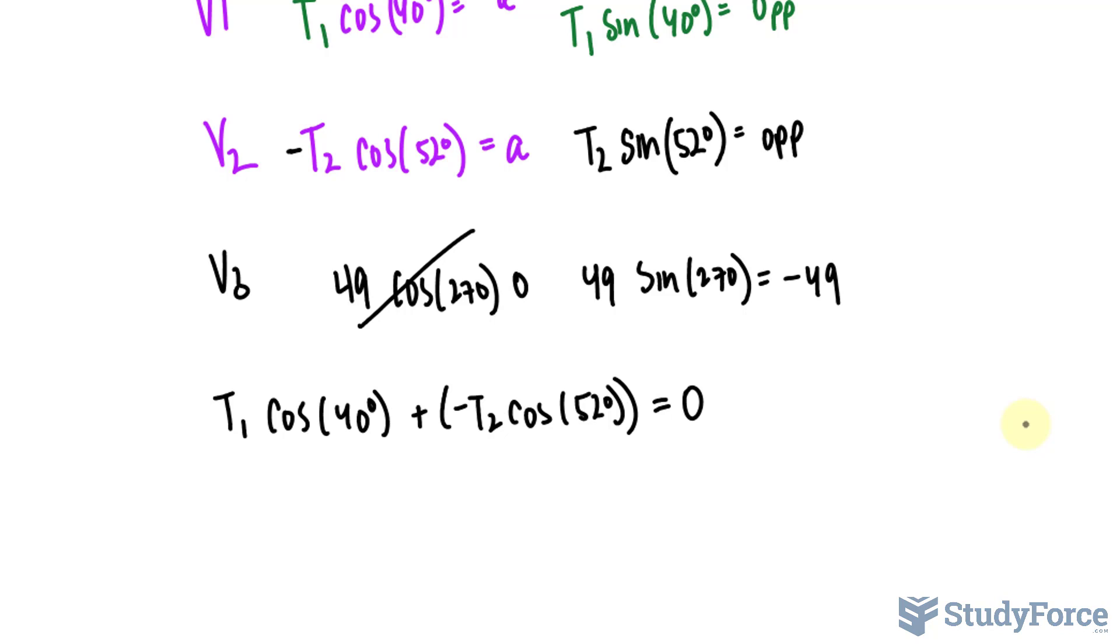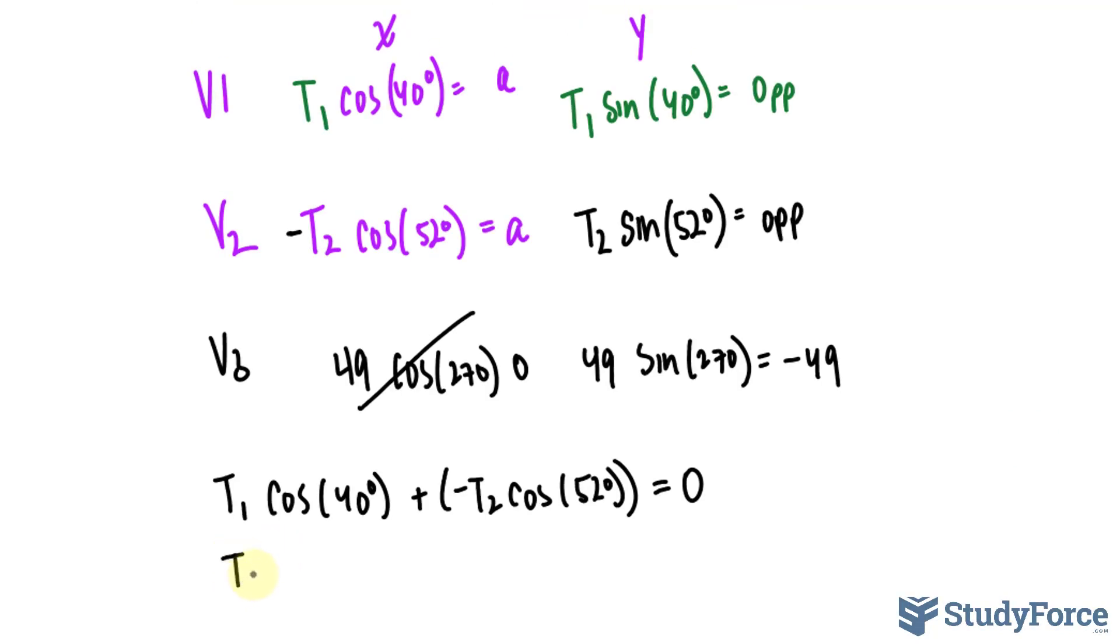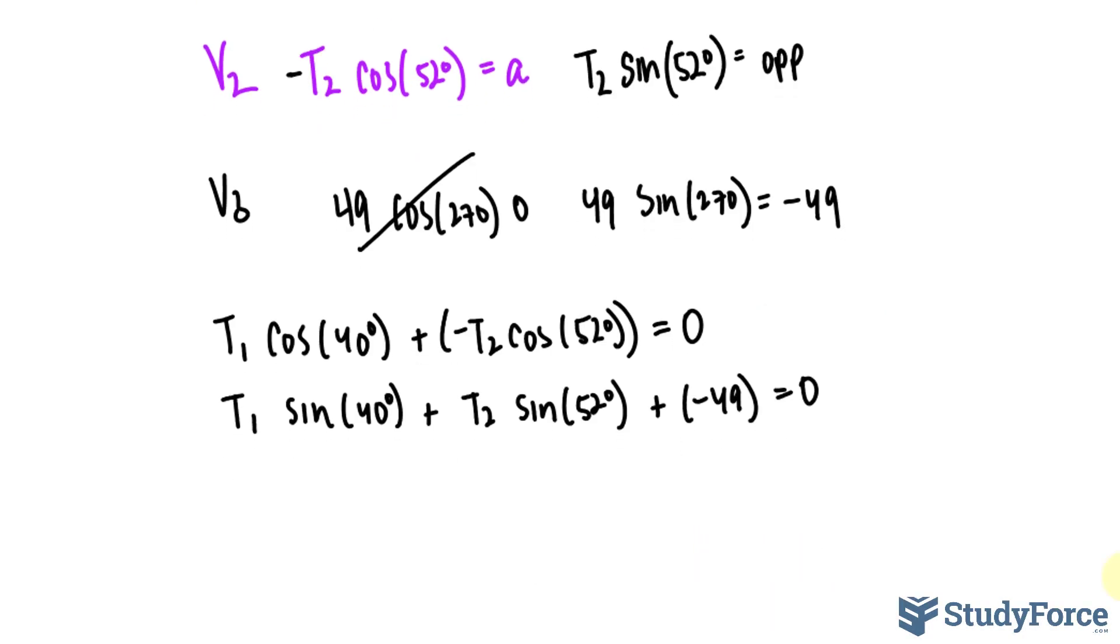That takes care of my x component of my resultant vector. Now moving on to these ones, T sub 1 sine at 40 degrees plus T sub 2 sine at 52 degrees plus negative 49 is equal to 0. Let's clean this up a little bit. We have a plus and a minus side by side, so we'll just write down minus. The same thing here, that becomes minus 49. And at the same time, I'll bring this constant over to the right side, where it becomes positive 49.